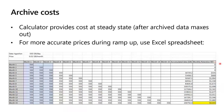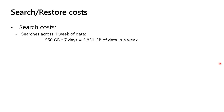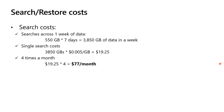Now let's look at the search cost. We were going to search across one week of data. If we're ingesting 550 gigabytes per day, multiplied by seven days, that's 3,850 gigabytes of data in a whole week. The cost of a single search over all this data is 3,850 multiplied by $0.005 per gigabyte, giving a total cost of $19 per search. If we're expecting to do around four searches per month, that would be a total of $77 per month.